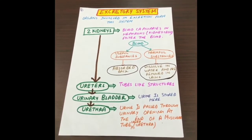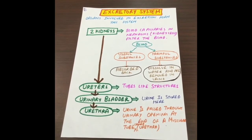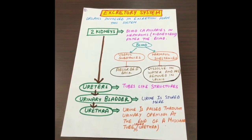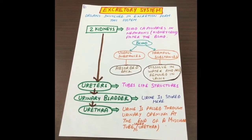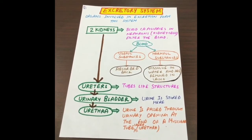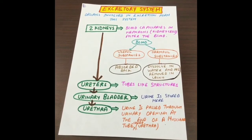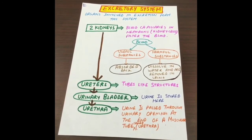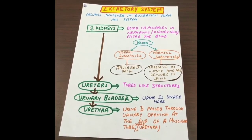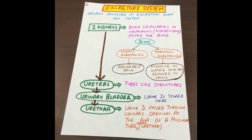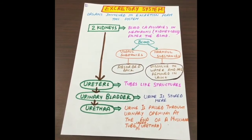Now let us learn about the human excretory system in a little detail. Organs involved in excretion form this system. These organs include two kidneys. The blood capillaries in nephrons, which are the kidney cells, filter the blood. When the blood reaches the two kidneys, it has both useful and harmful substances. The useful substances are absorbed back into the blood, while the harmful substances dissolve in water and are removed as urine. From the kidneys, the urine passes into the ureters, which are tube-like structures, and is stored in the urinary bladder. Urine is passed through the urinary opening at the end of a muscular tube called the urethra.